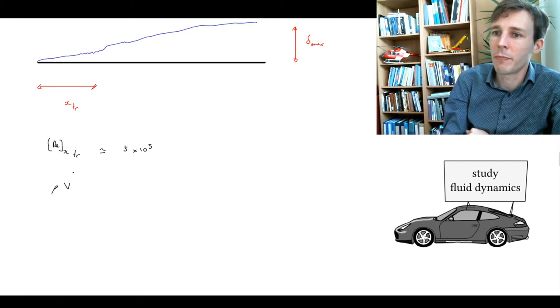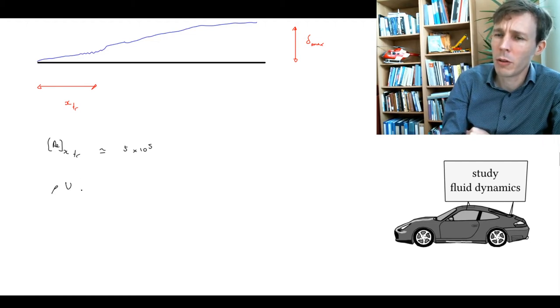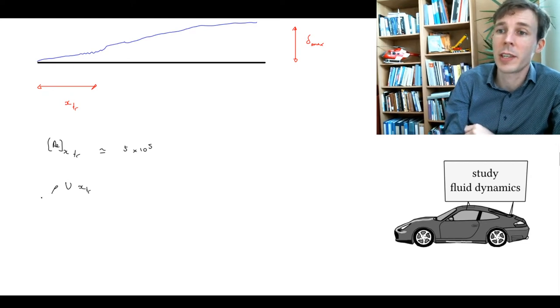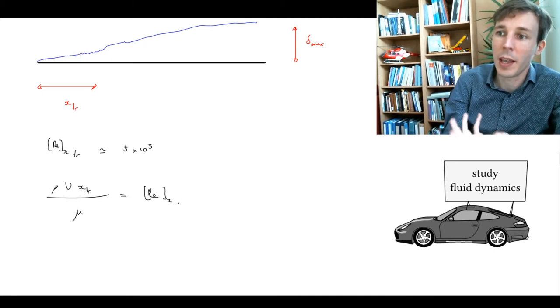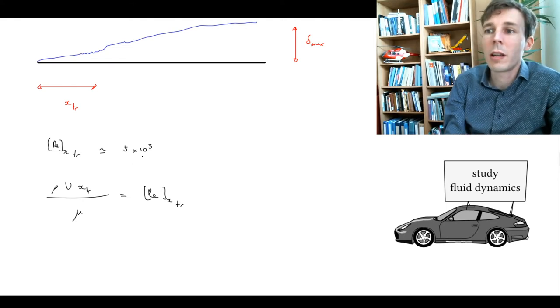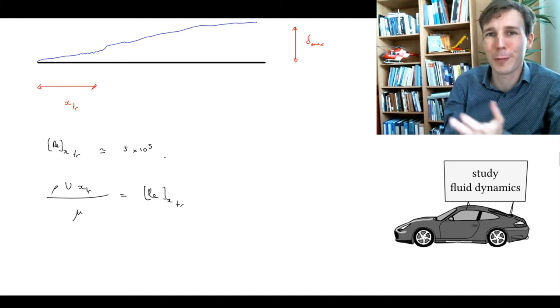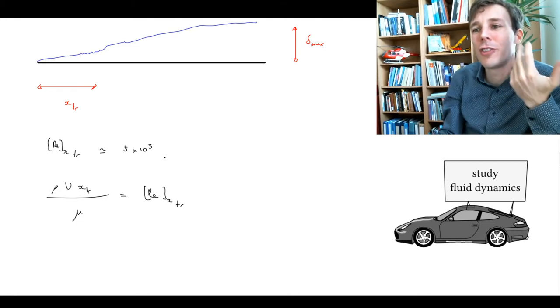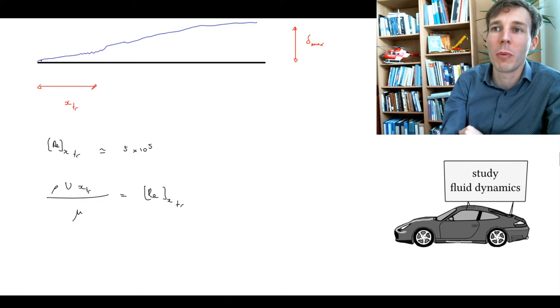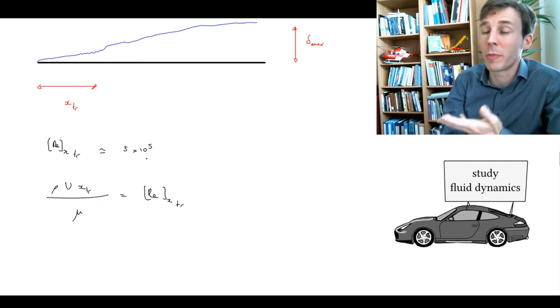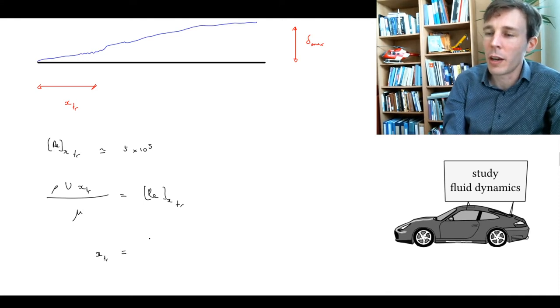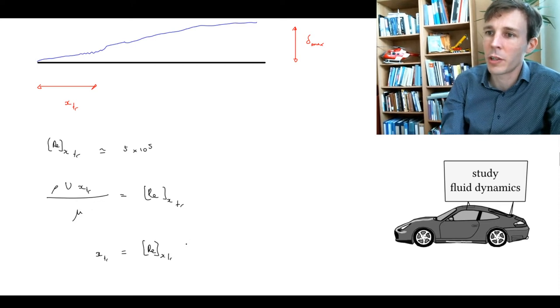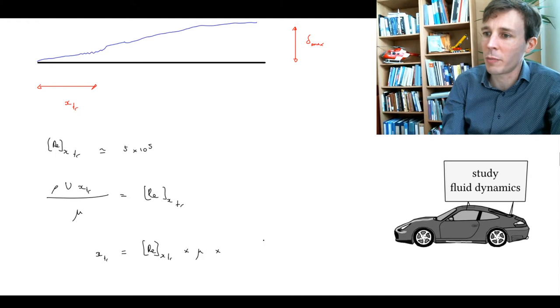We have rho, u times x, x-transition in this case here, divided by mu, the viscosity. This has to be equal to the Reynolds number of the transition. This is not a fixed absolute rule from physics, from the universe. This is just a general guideline, a general rule, depending on the conditions on the board. So you will have transition a bit earlier or a bit later. So let's isolate x-transition. x-transition is equal to the Reynolds number x-transition multiplied by the viscosity, multiplied by 1 over density times the main velocity.